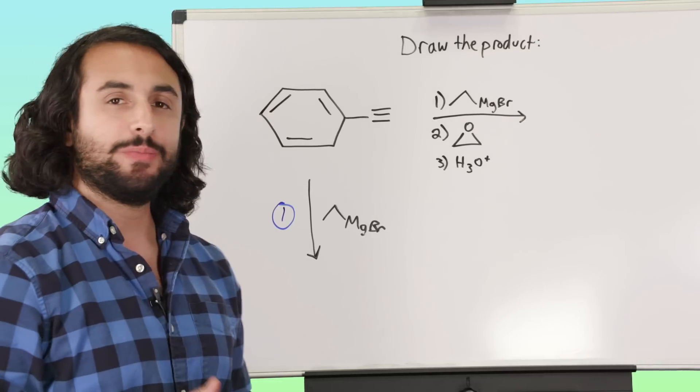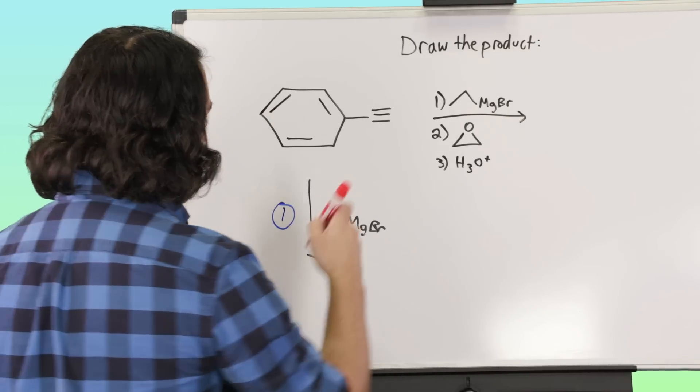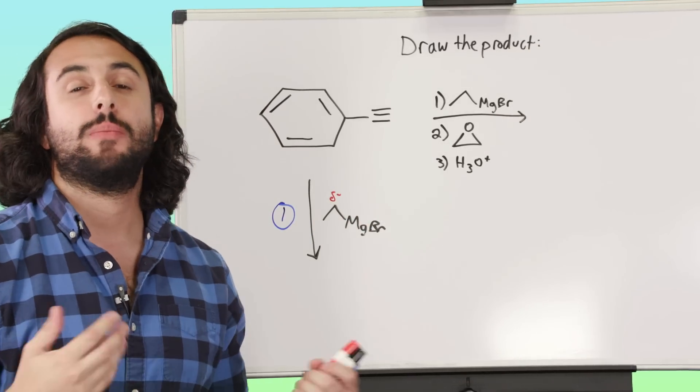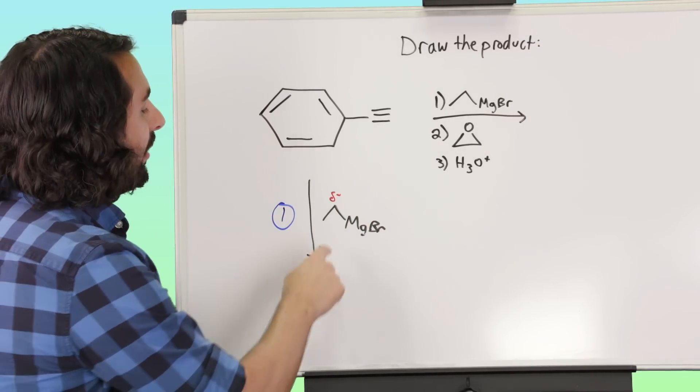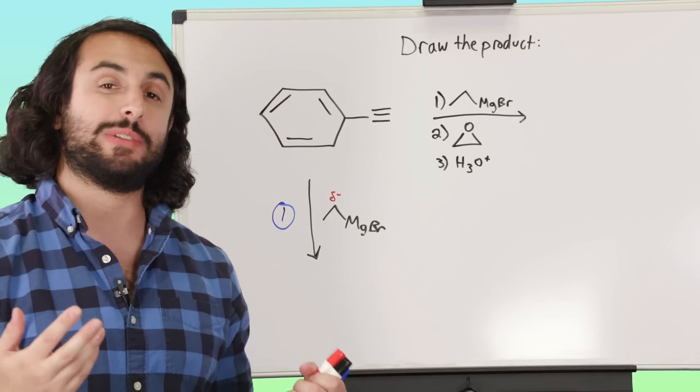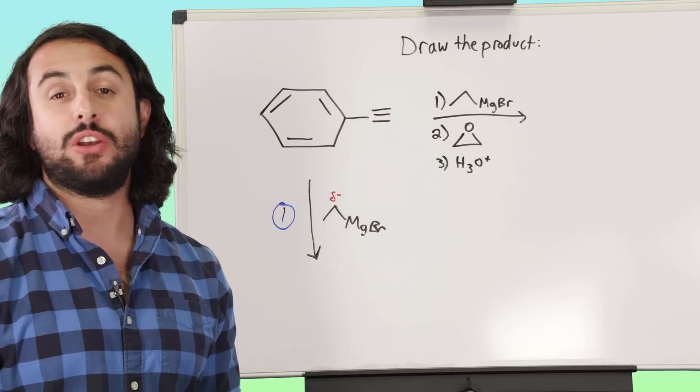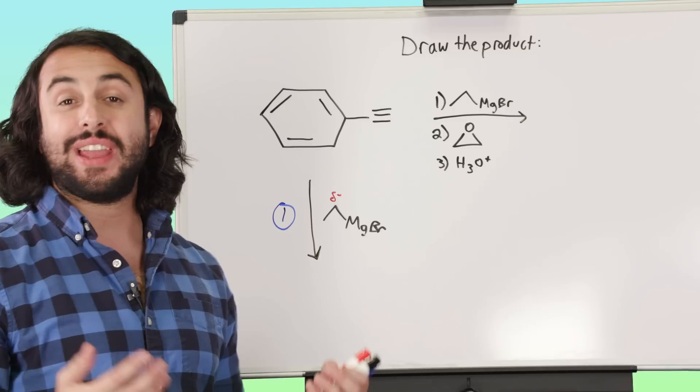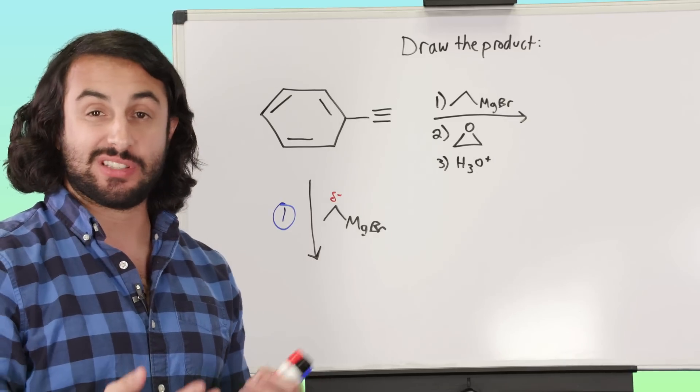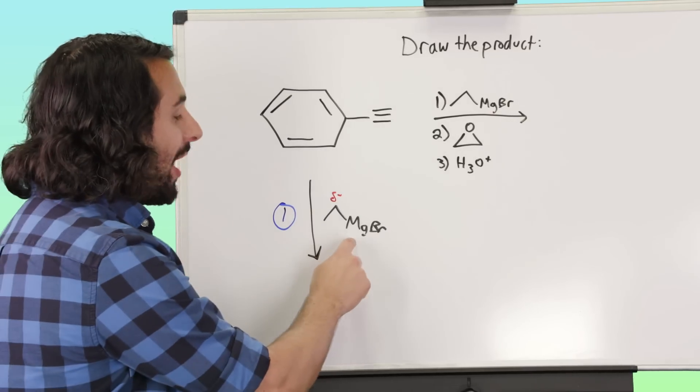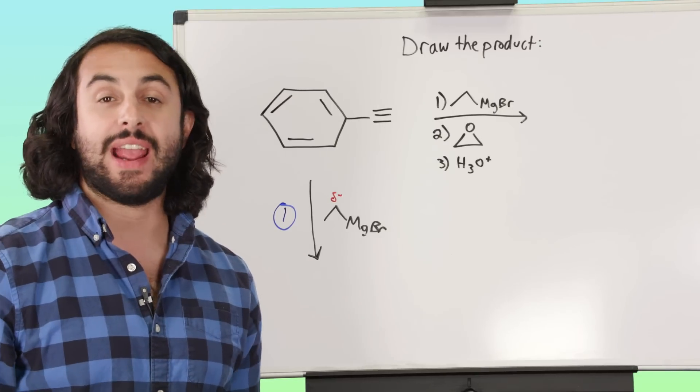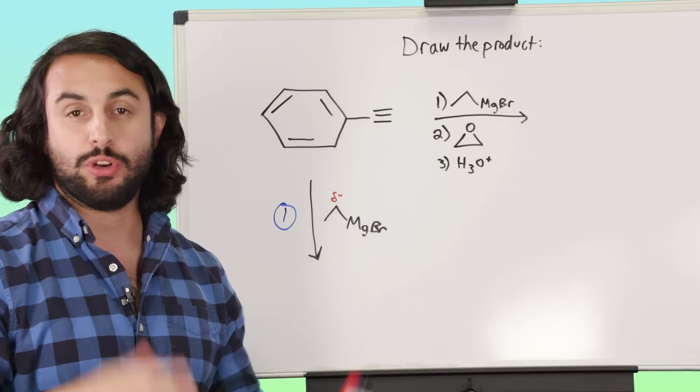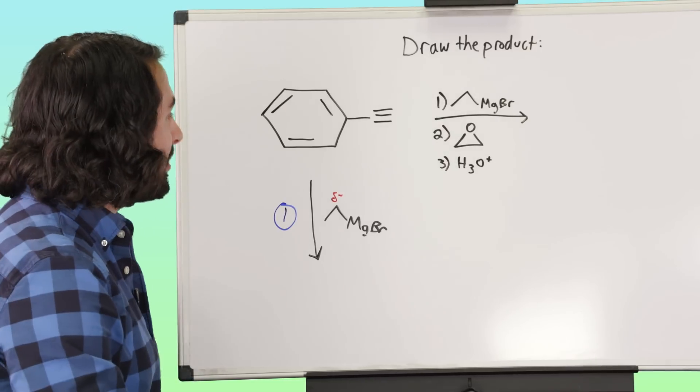But we know that this is actually a pretty strongly partial minus, it has a pretty strong partial negative charge on that carbon, that's why it's able to act as a nucleophile. And we know that nucleophiles can either coordinate to a substrate, or they can do an acid-base reaction if there's a sufficiently acidic proton. That's why we never run Grignard in aqueous conditions, because it'll just react with water, and that'll ruin your Grignard reagent.